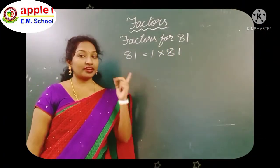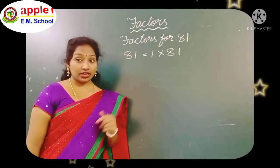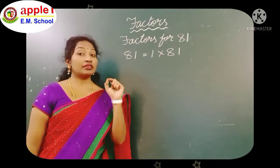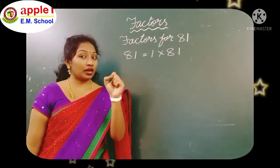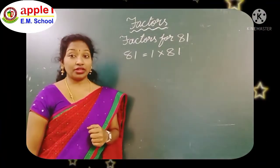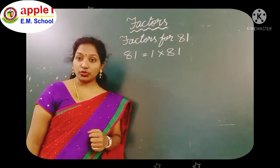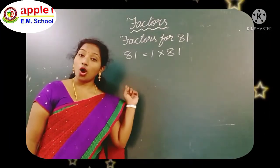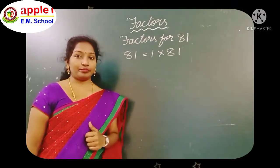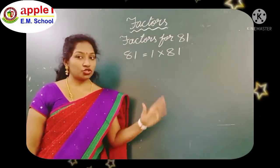Next, go to the 2 table. 81 will come in the 2 table? All even numbers will come in the 2 table. 81 — is it even or odd? 81 is an odd number, so 81 will not come in the 2 table.